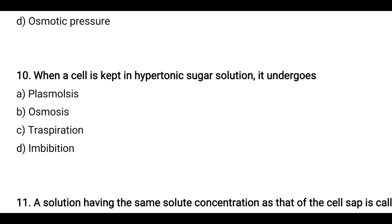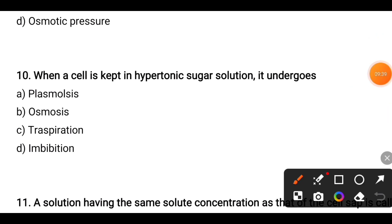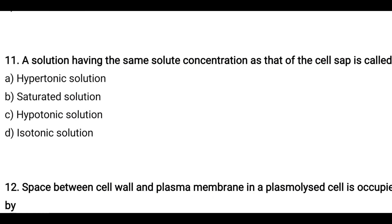Next question: When a cell is kept in a hypertonic sugar solution, it undergoes — options are plasmolysis, osmosis, transpiration, or imbibition. Hypertonic means a high concentrated sugar solution. The answer is osmosis — osmosis occurs, and water from the cell moves outside into the solution, meaning exosmosis occurs.